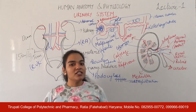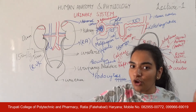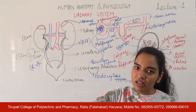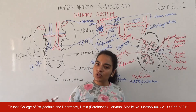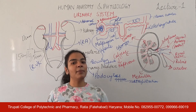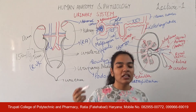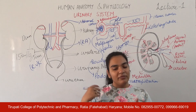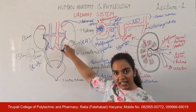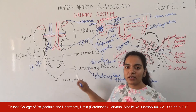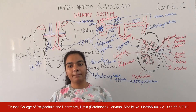So this was urine formation. In this lecture, we studied the urinary system — which organs are responsible for urinary formation, the anatomy of the kidney, and urine formation. In the next chapter, we will continue with the urinary system. Thank you.